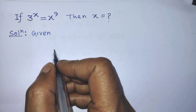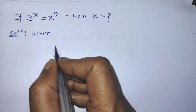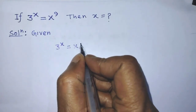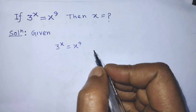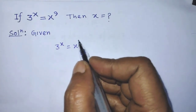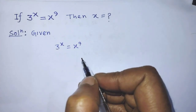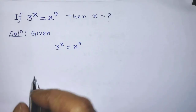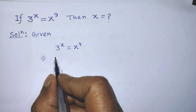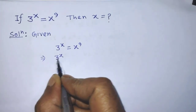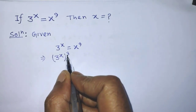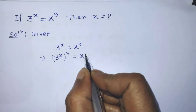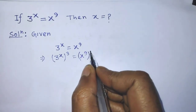Our given algebraic equation is 3 to the power x is equal to x to the power 9. To find the value of x from this exponential equation, first of all we have to take power 3 on both sides. On the left hand side we can write 3 to the power x, whole to the power 3, and on the right hand side, x to the power 9, whole to the power 3.